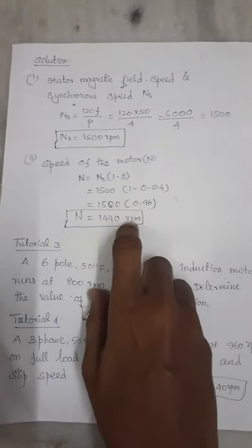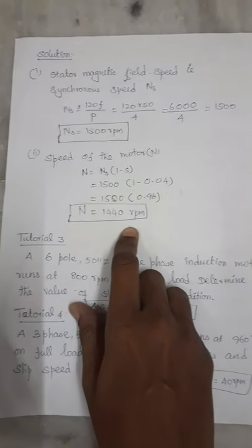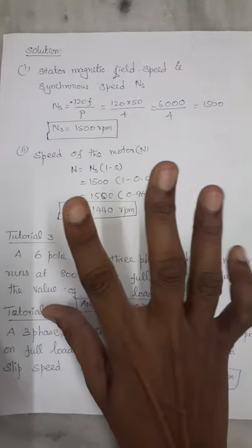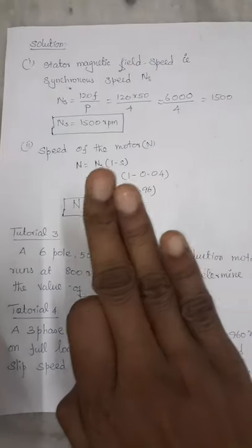Speed of the motor is Ns into 1 minus S. All the things were given, merely substituting the three basic formulae you can find all the details one by one according to the asked equation.